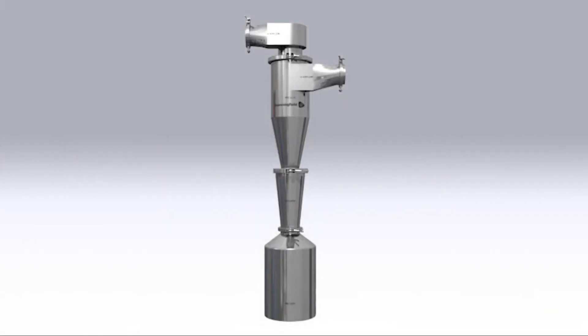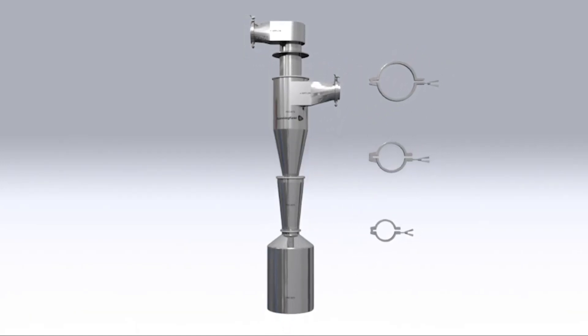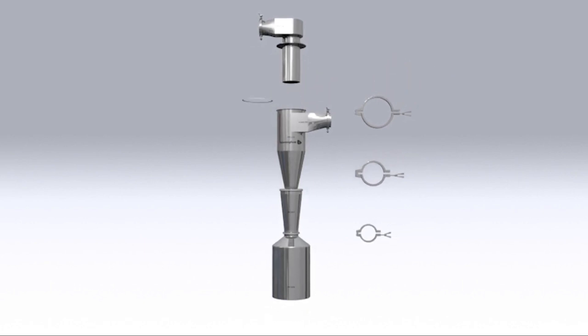The Unidust Cyclone has no filters, no moving parts, and is specifically designed for GMP environments. The unit is constructed from 316L stainless steel using tri-clover connections for quick dismantling and ease of cleaning.